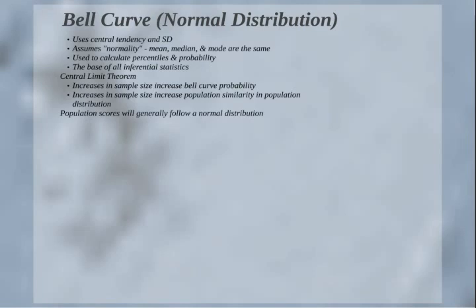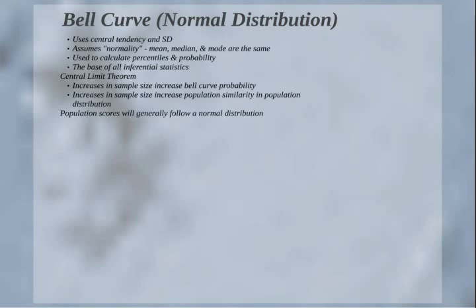The assumption here is that we utilize the idea of central limit theorem. It's extremely important that you understand this before moving forward. The idea of central limit theorem is that increases in sample size increase the bell curve probability and population similarity. Population scores generally follow a normal distribution. Basically, central limit theorem states that the more people you have in a sample or the larger your population, the more normal your bell curve distribution will be.